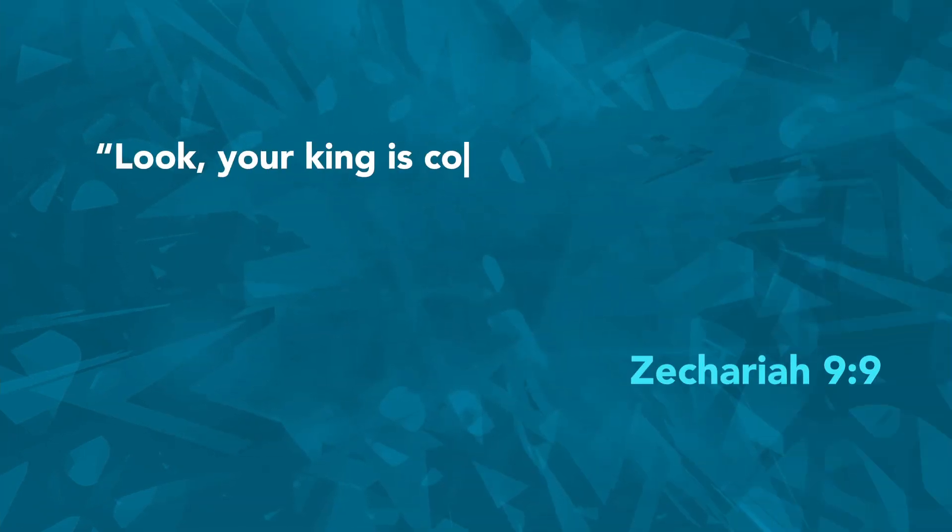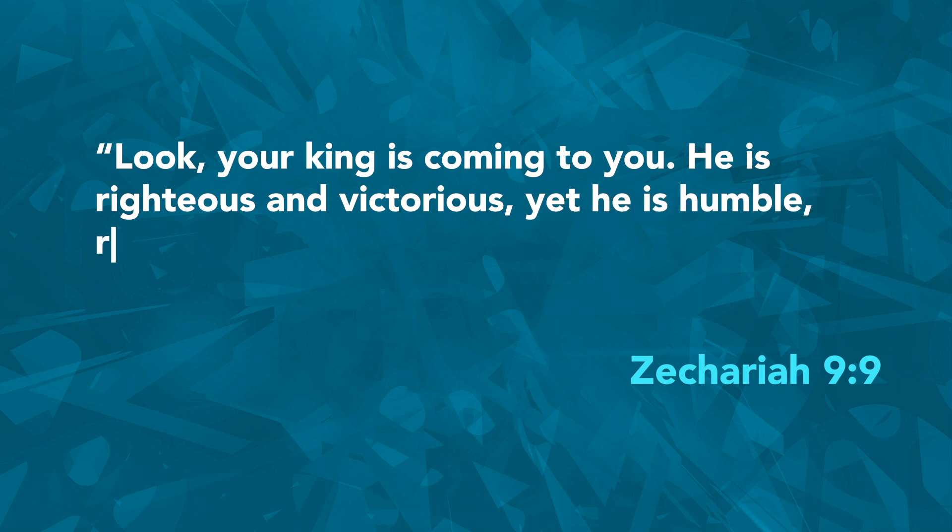God also spoke through prophets and gave promises of a future king who would come to rescue them and rule forever. In Micah 5:2, it describes this king as being born in the town of Bethlehem. And Zechariah 9:9 describes this promised king this way: 'Look, your king is coming to you. He is righteous and victorious, yet he is humble, riding on a donkey, riding on a donkey's colt.'